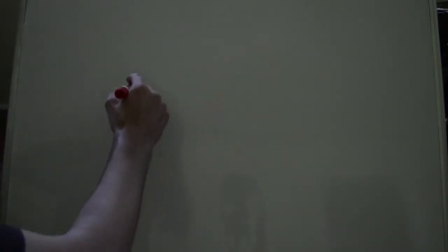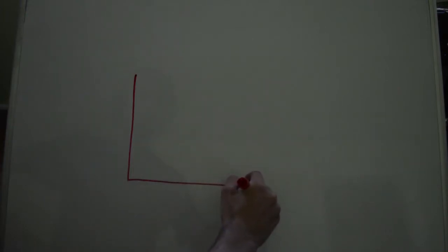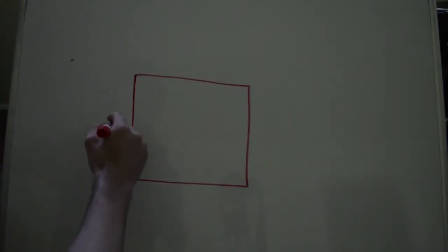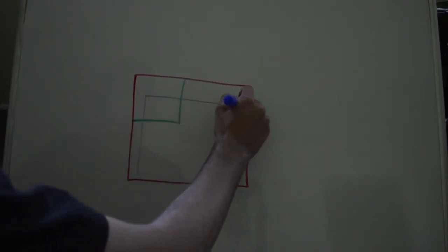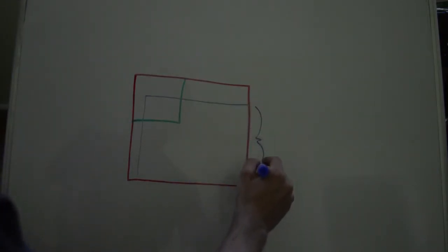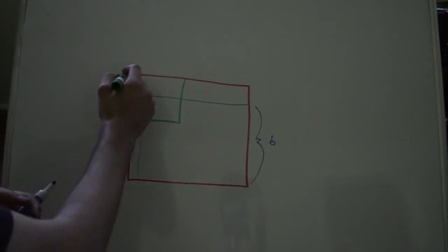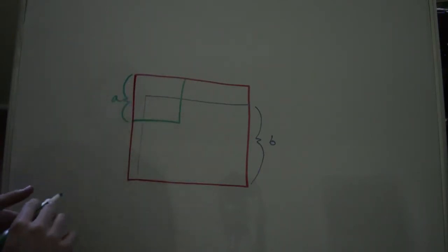So I thought of a different way of thinking about this. So you start with a square, simple enough. And the square has side length c and has an area of c squared. Let's say we add two other squares to this. So one square right here and one square right here. Now let's call this side length right here b. Let's call this side length right here a. And of course this is still c.